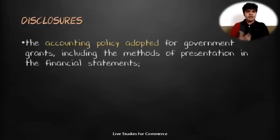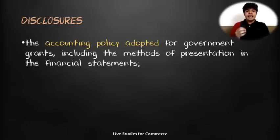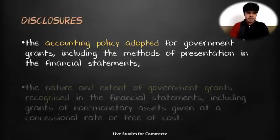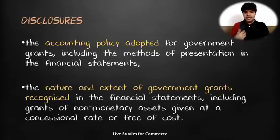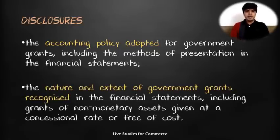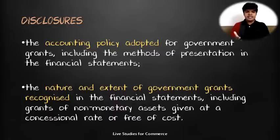The disclosure requirements as per AS 12 include: the accounting policy adopted for government grants including the method of presentation in the financial statements, and the nature and extent of government grants recognized in the financial statements, including grants for non-monetary assets given at a concessional rate or free of cost.